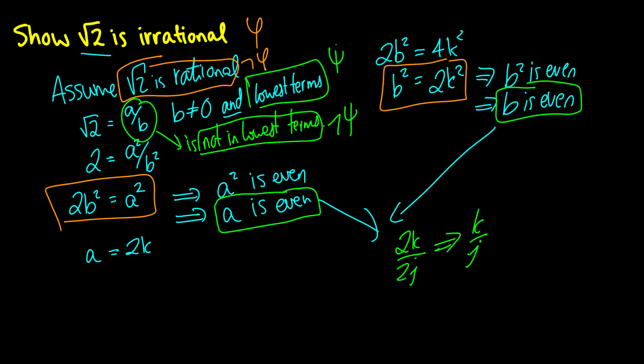So we have here, if we have ¬φ, then we get ψ and ¬ψ, which means that we get ¬¬φ, which is going to be equal to φ. So we've actually proven that √2 is irrational.